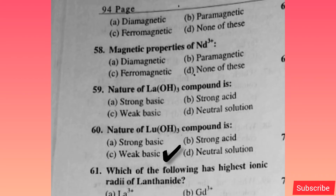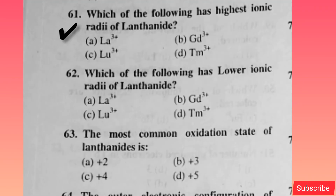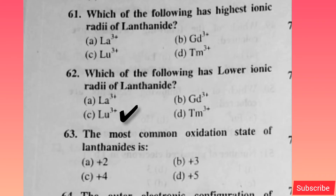Nature of La(OH)3 compound is — option A is correct. Nature of Lu(OH)3 compound — option C is correct. Which of the following has the highest ionic radius in the lanthanide series? Option A is correct. Which of the following has the lower ionic radius of lanthanide? Option C is correct.